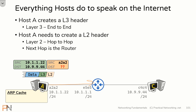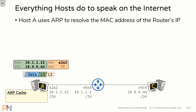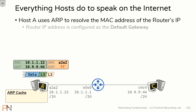Host A, just like before, is going to have to use ARP to resolve the MAC address of the router. But there's something we have to mention: how does host A even know the router's IP address? The answer is that the router's IP address is already configured on host A as host A's default gateway.